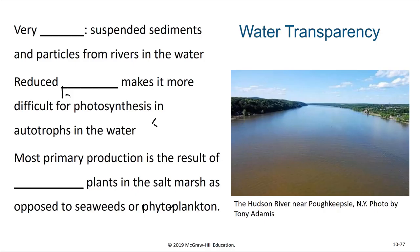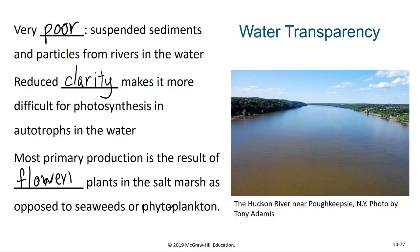Another difficulty of estuaries has to do with water transparency. They are usually so full of sediments from terrestrial regions that the ability of light to penetrate the waters is greatly reduced — water transparency is very poor due to suspended sediments and particles from rivers. This reduced visibility makes it more difficult for photosynthesis and autotrophs in the water, and most of the primary production of estuaries is the result of flowering plants on land, as opposed to seaweeds or phytoplankton. This reduced visibility also makes it difficult for certain visual predatory fish to find their prey. However, sharks have been known to swim in estuaries and up rivers seeking prey, and their ability to detect electrical impulses using their ampullae of Lorenzini allows them to find prey even when the water is murky.